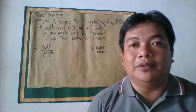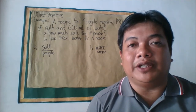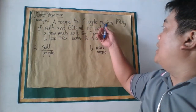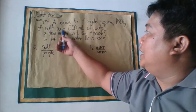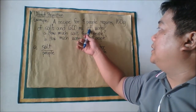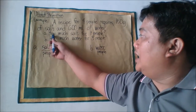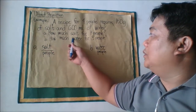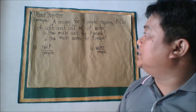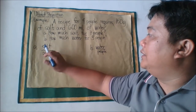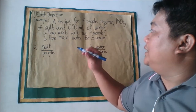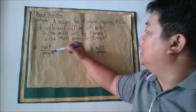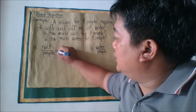Here is an example problem about direct proportion. A recipe for four people requires 150 grams of salt and 600 milliliters of water. The questions are: (a) how much salt is needed for seven people, and (b) how much water is needed for three people? For letter A, we determine the ratio of salt to people.